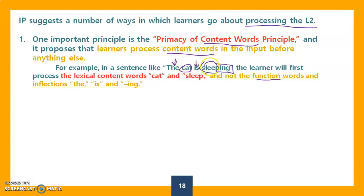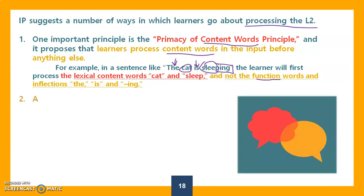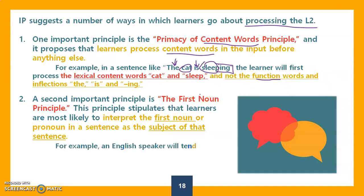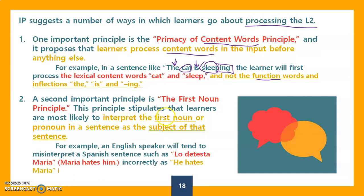A second important principle is the first noun principle. This principle stipulates that learners are most likely to interpret the first noun or pronoun in a sentence as the subject. For example, an English speaker will tend to interpret a Spanish sentence such as 'lo detesta Maria' (Maria hates him) incorrectly as 'he hates Maria,' in which the pronoun 'lo' is misinterpreted as the subject. VanPatten gave these two principles as examples of processes that happen during second language acquisition.